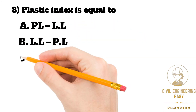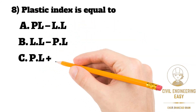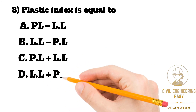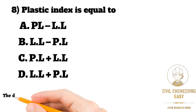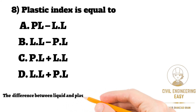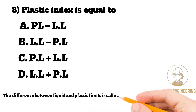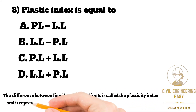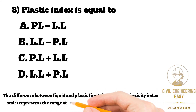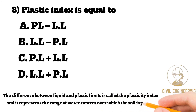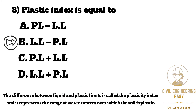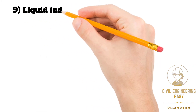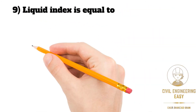In MCQ number eight, plasticity index is equal to: option A plastic limit minus liquid limit, option B liquid limit minus plastic limit, option C plastic limit plus liquid limit, option D liquid limit plus plastic limit. The difference between liquid limit and plastic limit is called the plasticity index, and it represents the range of water content over which the soil is plastic. Correct option is liquid limit minus plastic limit.